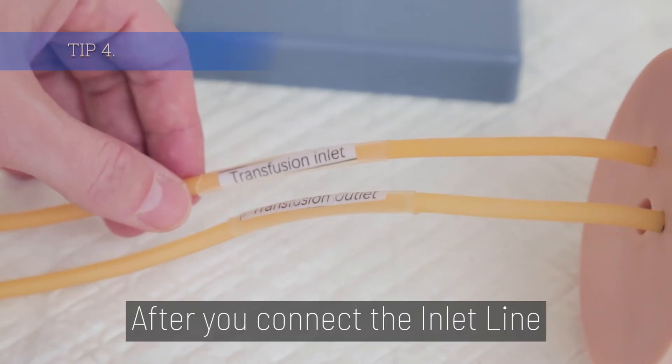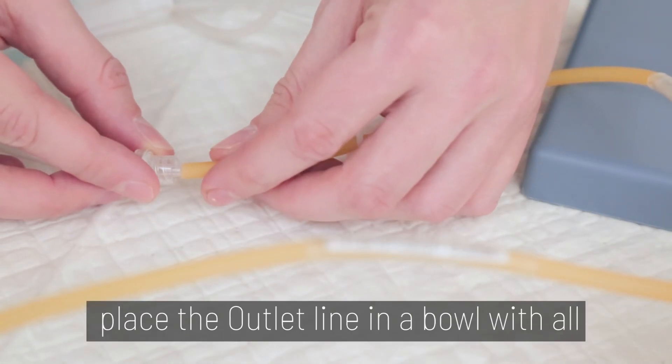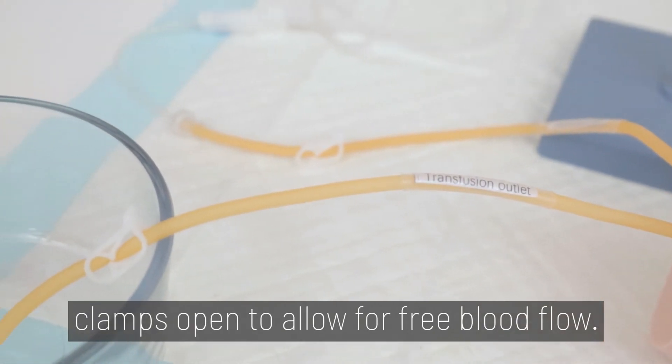Tip 4. After you connect the inlet line, place the outlet line in a bowl with all clamps open to allow for free blood flow.